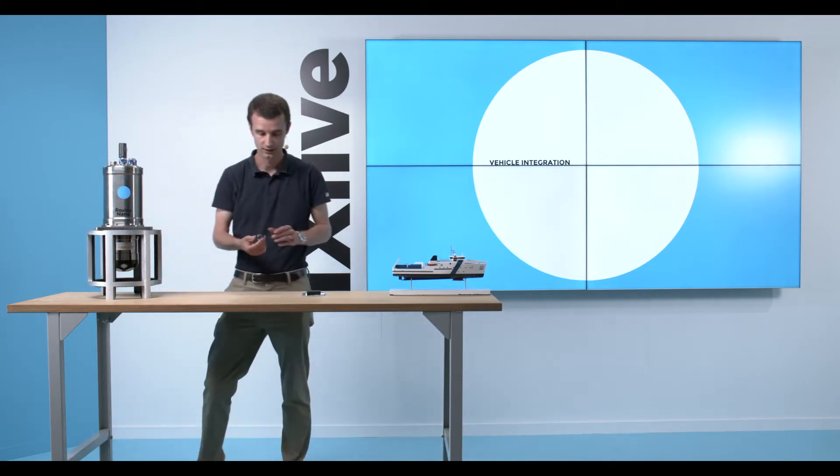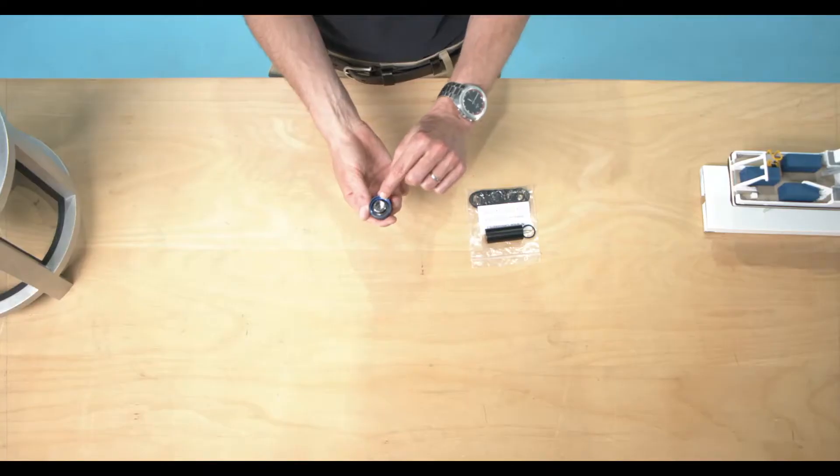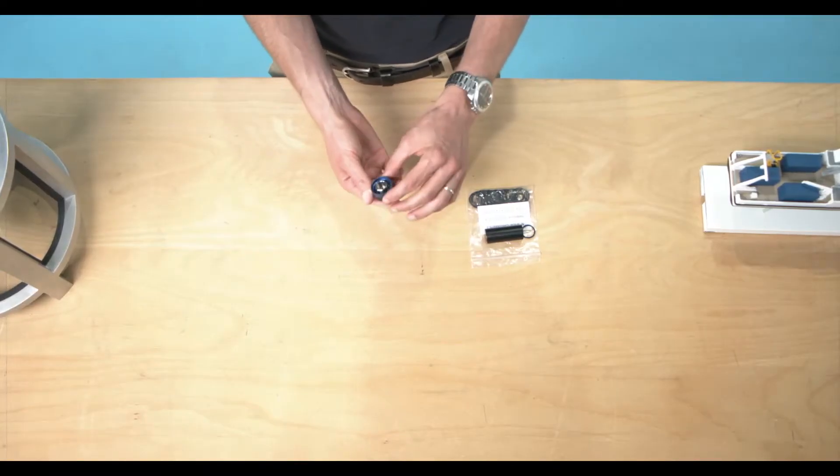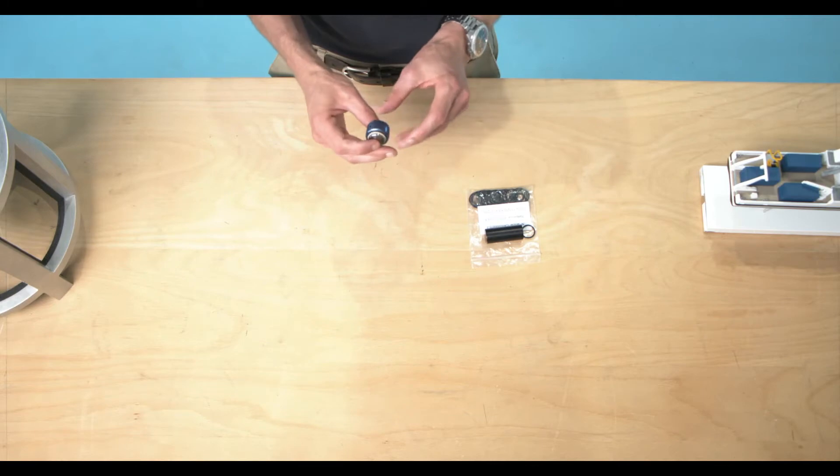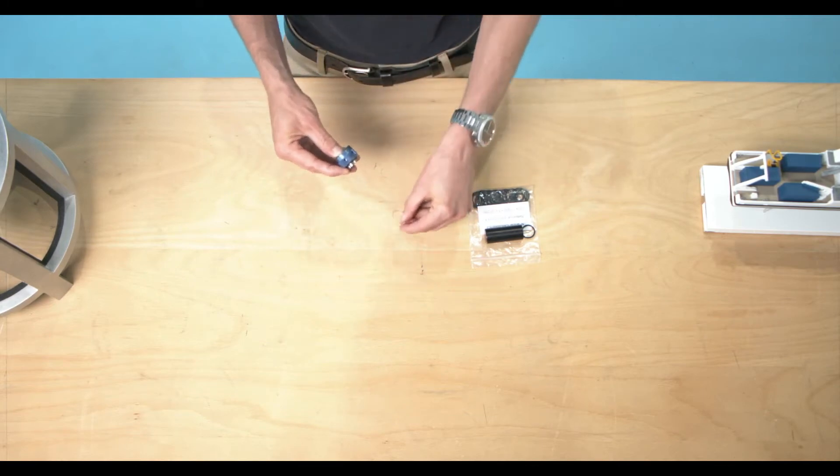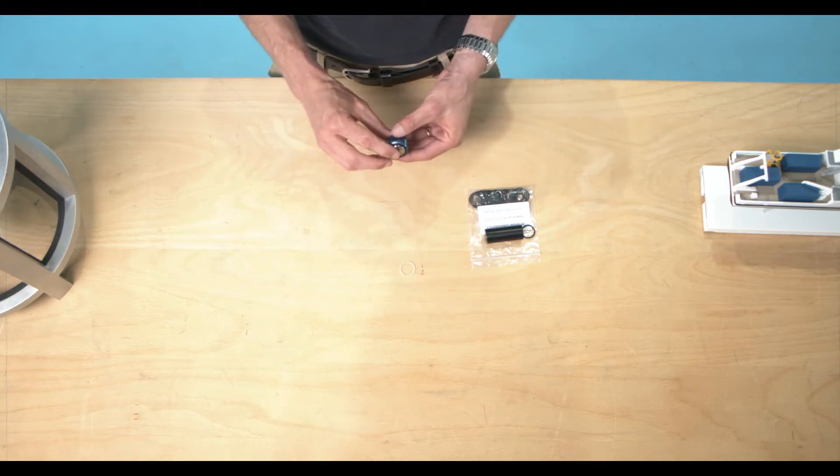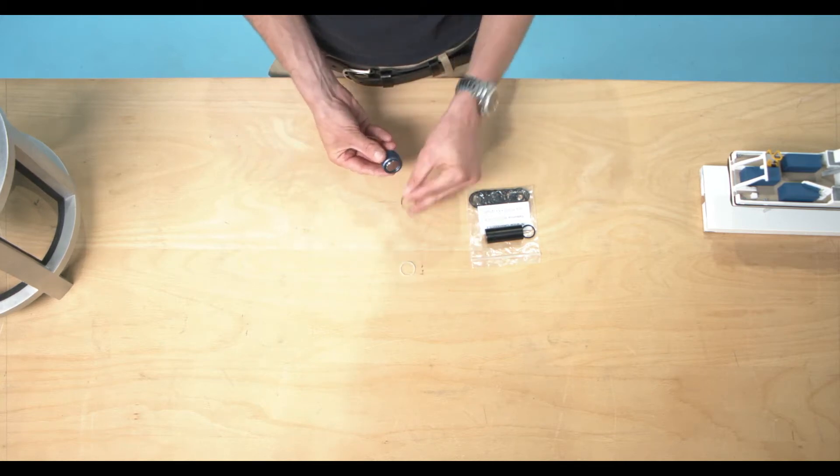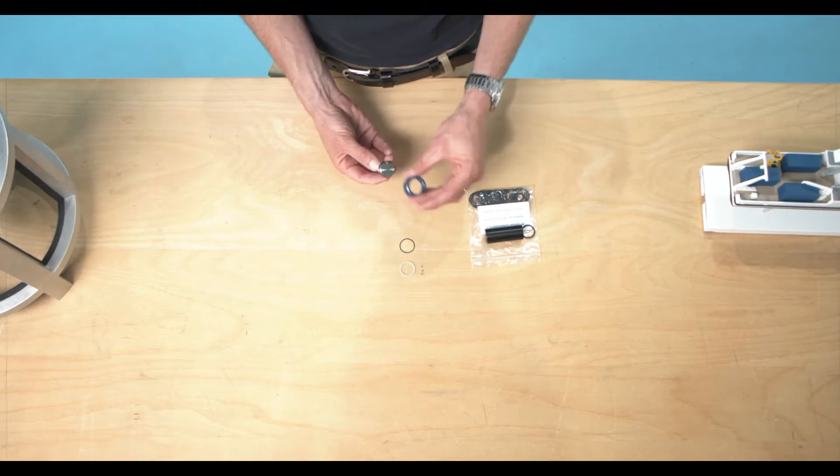For example, I have this connector here that is missing an O-ring. So I will service it before your eyes so you see it's very simple and takes a few seconds to service them. I just remove all the parts one by one, put them on the bench.